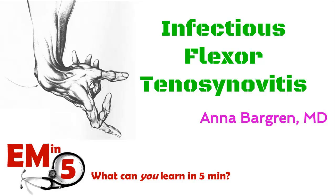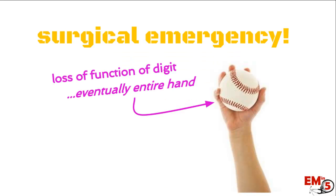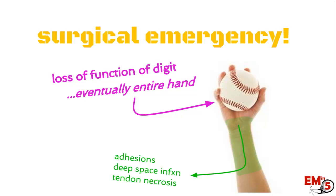Welcome to today's EM in 5. We're going to talk about infectious flexor tenosynovitis. This is so important because it's a surgical emergency. If you miss it in the ER, if it goes undetected, if you send these patients home with a diagnosis of cellulitis, they could end up having loss of function of the digit, maybe even eventually the entire hand. Sometimes the infection can spread and cause deep space infections, adhesions, or even tendon necrosis.